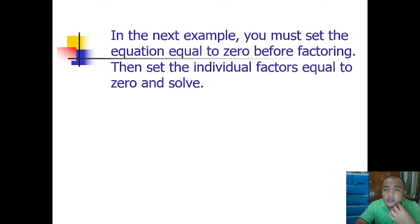Next, in this example you must set the equation equal to 0 before factoring, then set individual factors equal to 0 and solve. x²-27=6x.